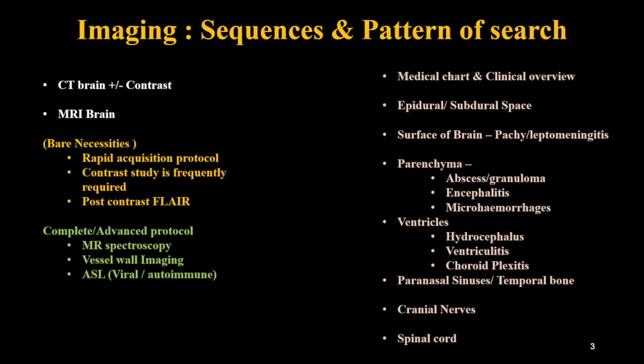When reviewing the scan, it is always better to have the clinical overview and medical chart in front of you. Start from the epidural and subdural space, look at the pachymeninges, the leptomeninges, and the parenchyma for any signal alteration — abscesses, granulomas, or features of encephalitis, any micro-hemorrhages or bleeds. Look at the ventricles: are they enlarged? Is there any sign of developing hydrocephalus, enhancement of the ventricular margin, ventriculitis, or choroid plexitis? Also look at the paranasal sinuses, the temporal bone, cranial nerves, and spine if imaging was performed.